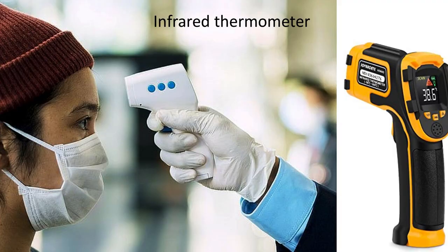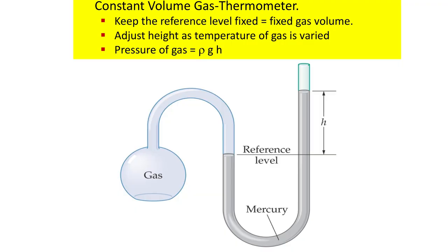One of the oldest kinds of thermometers was the constant volume gas thermometer. There's gas in this and this gas is kept at a fixed volume because there's this reference level that's constant. There's this column of liquid of height h.